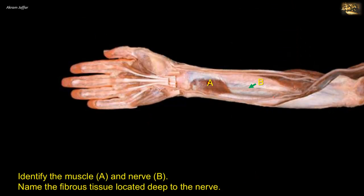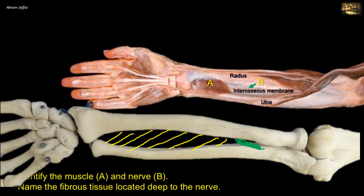Identify the muscle A and nerve B, and name the fibrous tissue located deep to the nerve. This is a deep dissection of the flexor compartment of the forearm showing the radius and ulna, and in between them, the whitish fibrous membrane called the interosseous membrane. As its name indicates, it is located between two bones. The interosseous membrane is thin but a strong membrane uniting the interosseous borders of the radius and ulna. Its fibers run obliquely downward and medially — from the radius down to the ulna — and it provides for muscle attachment.